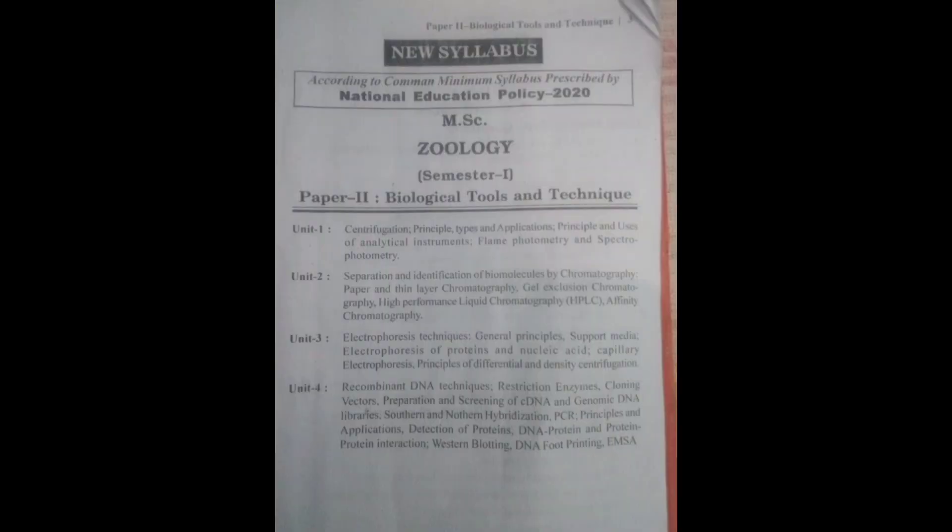MSc Zoology Semester First, Paper Second: Biological Tools and Techniques. Unit First: Centrifugation — principle, types and applications. Principle and uses of analytical instruments: flame photometry and spectrophotometry. Unit Second: Separation and identification of biomolecules by chromatography — paper and thin layer chromatography.